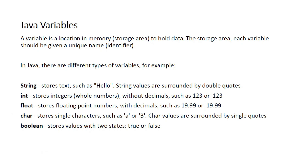Floating point holds numbers with decimals, such as 19.99 or minus 19.99 — this is a floating point value. Character value is a single character like a, b, or c.